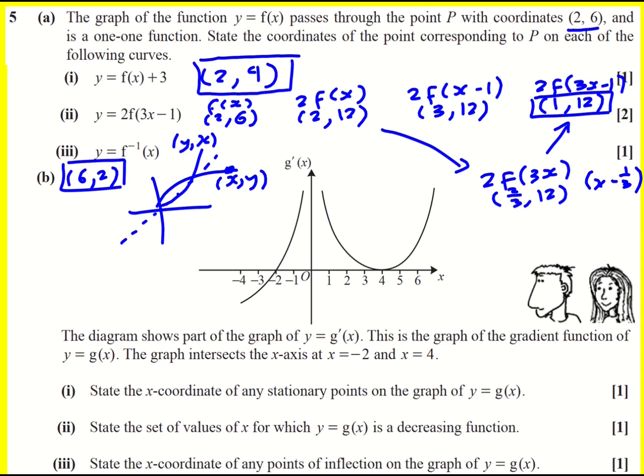On to part b. Here we are given a graph of y equals g dash x, so the gradient function itself. A bit harder to get your head around when it's something like this. We're told where it intersects the x axis, and then we're asked for the x coordinates of any stationary points. This is very important. Stationary points, don't forget, is when g dash of x is equal to zero. So normally you're looking at where the function is turning. But because we are plotting g dash of x, it's where the gradient function goes or touches the x axis. And so the answer is x equals minus two or four.